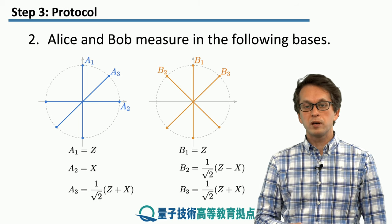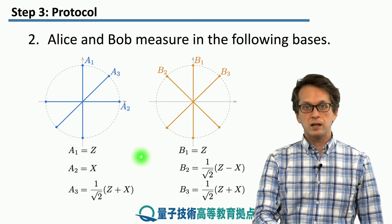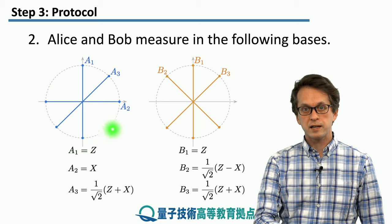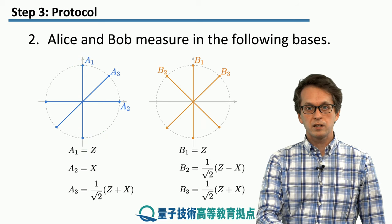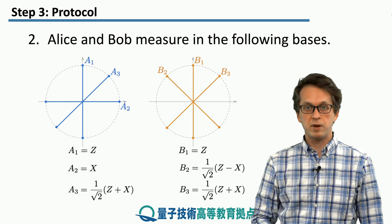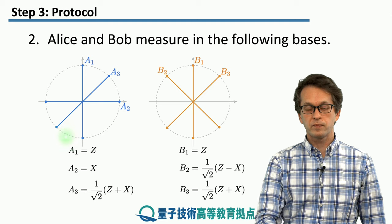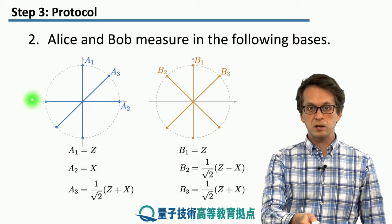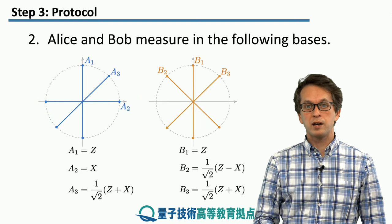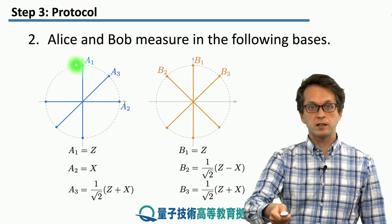Alice and Bob randomly choose a measurement basis in which they measure their qubits. Alice chooses from three measurement bases. This circle represents the XZ plane of a Bloch sphere. Her measurement setting A1 corresponds to measurement in the Z basis — she projects the state either into 0 or 1. She can also measure in the X basis given by the horizontal direction, or in a rotated basis A3, which is a linear combination of Z plus X.